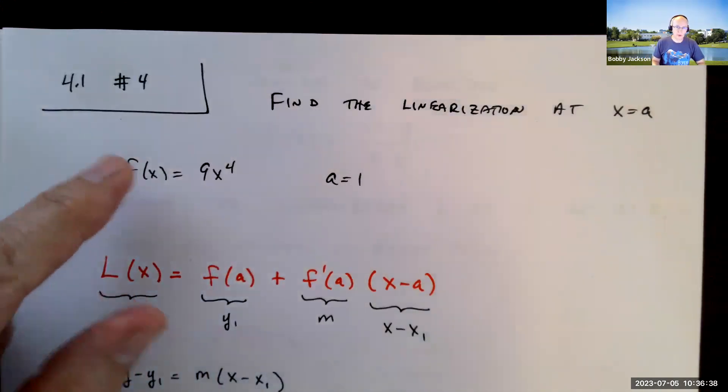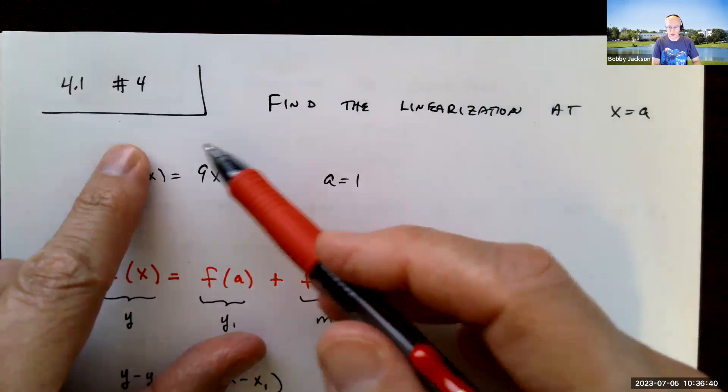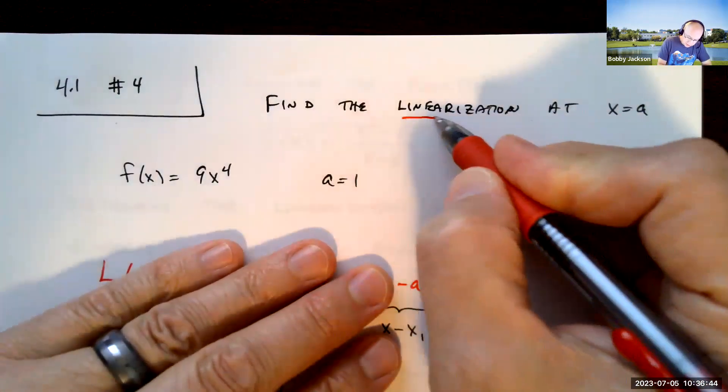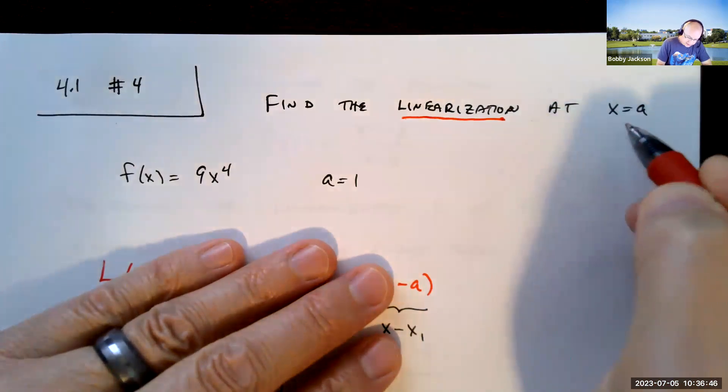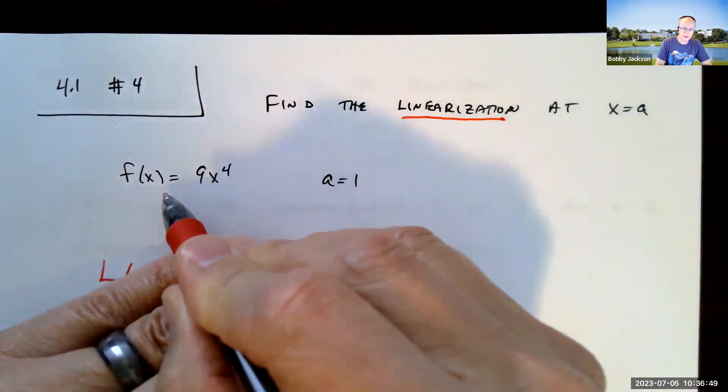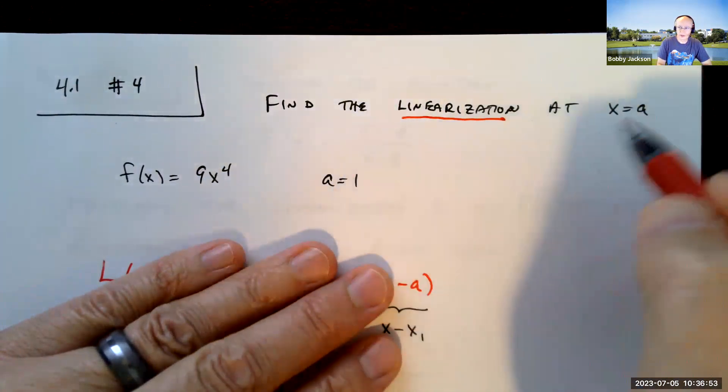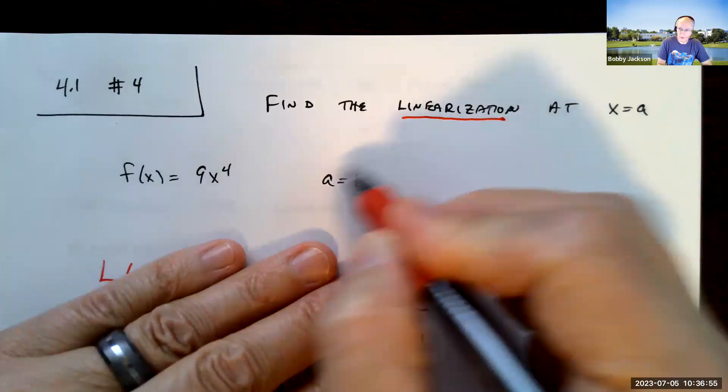Hey everyone, let's look at number four in section 4.1 of Achieve. We're to find the linearization at x equal a for this function here, f of x equals 9x to the fourth, and the value of a is 1, so basically at x equal 1 is what we're doing here.